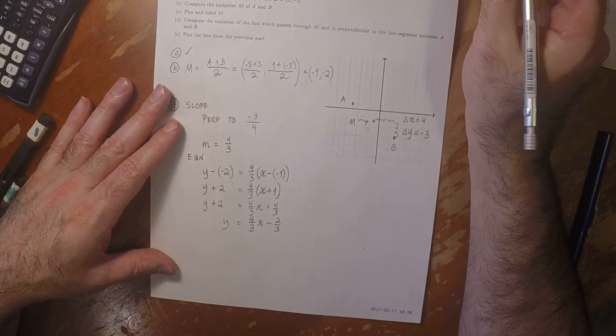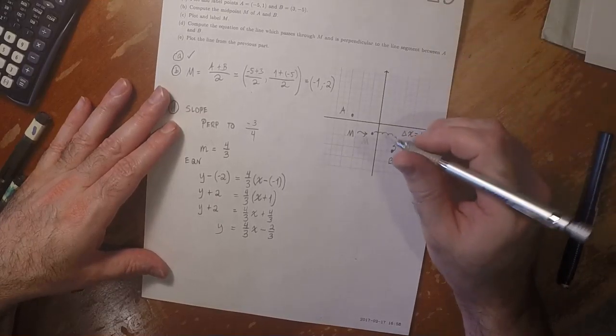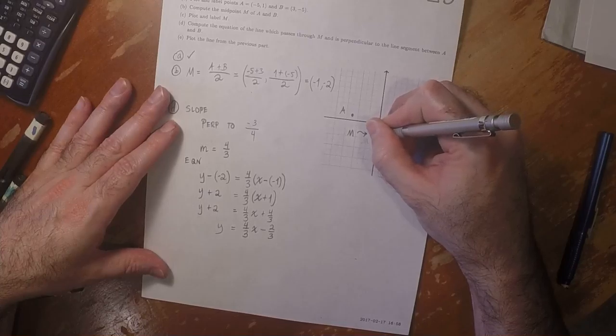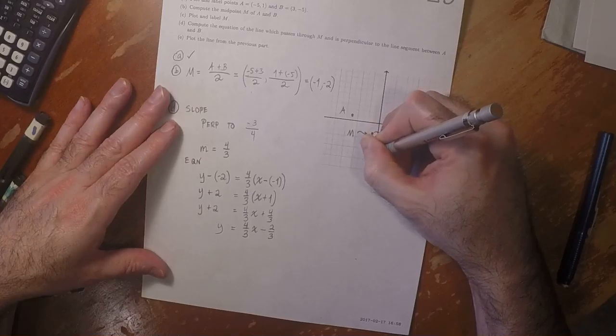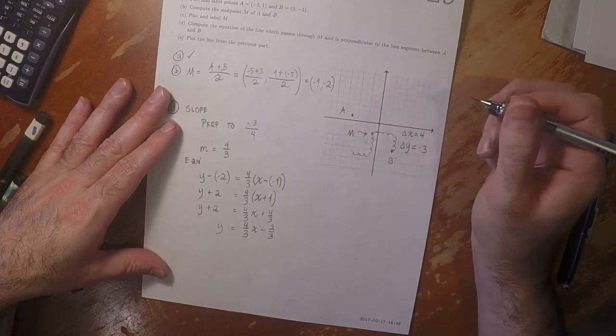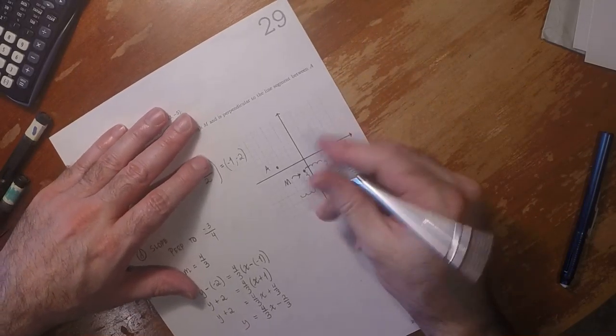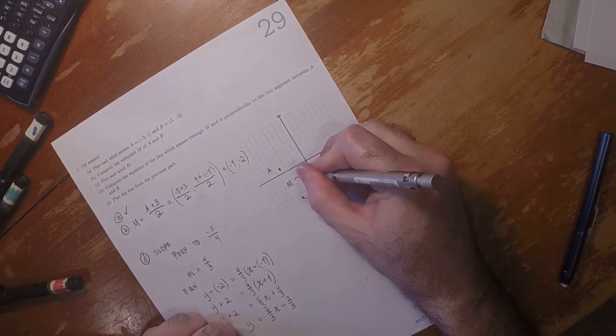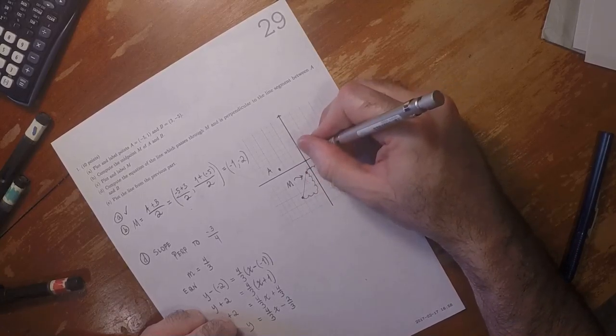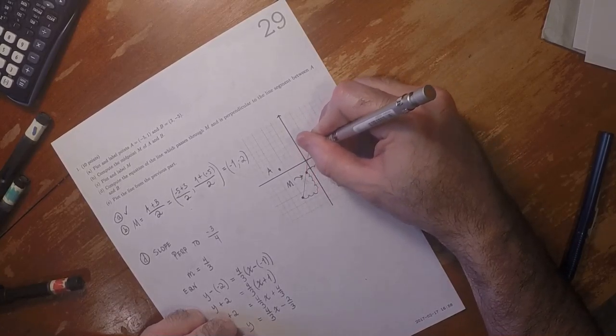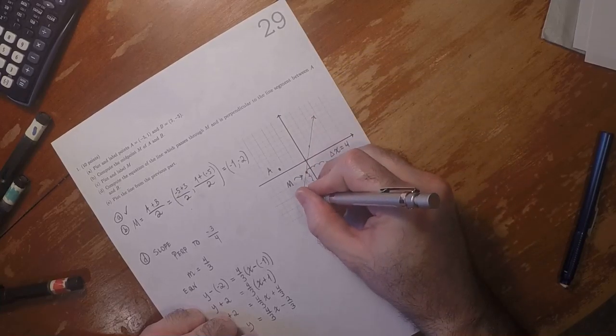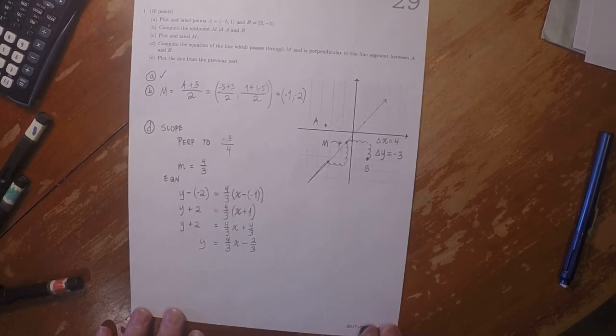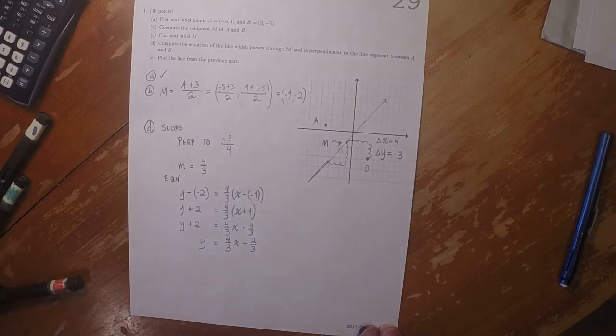And now we want to plot that line, which means we would have to go down 4 and then left 3. So 1, 2, 3, 4, 1, 2, 3. So the line requested is this one. And that's the answer. Thank you.